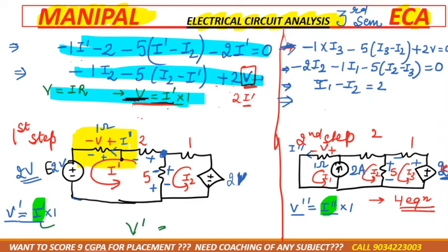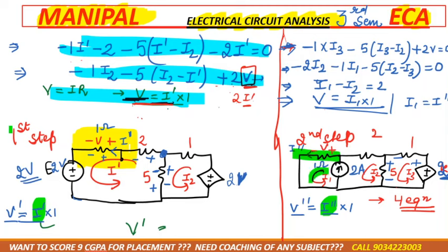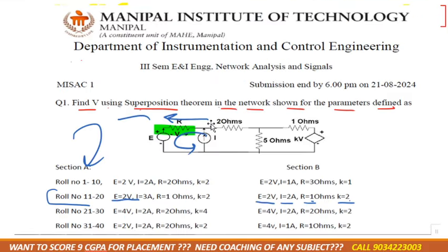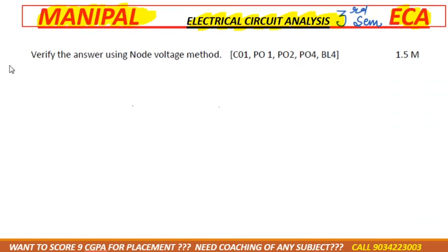The dependent source depends on voltage v. The fourth equation comes from the dependent source: in terms of i1, we can say i1 equals i-double-dash since both currents flow in the same direction. With four equations and four variables (i1, i2, i3, and i-double-dash), we can solve for i-double-dash, then get v-double-dash. The final answer is v equals v-dash plus v-double-dash.